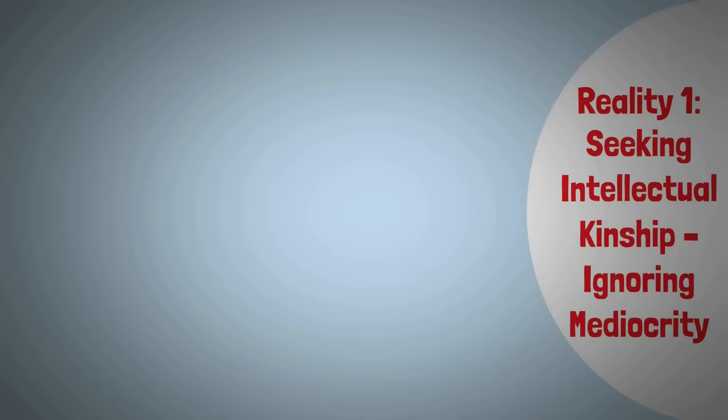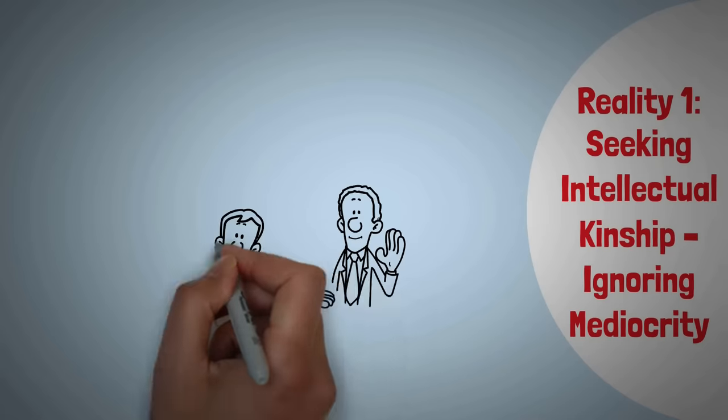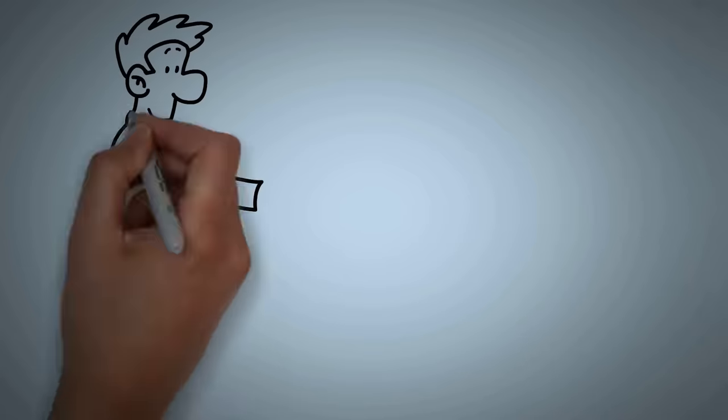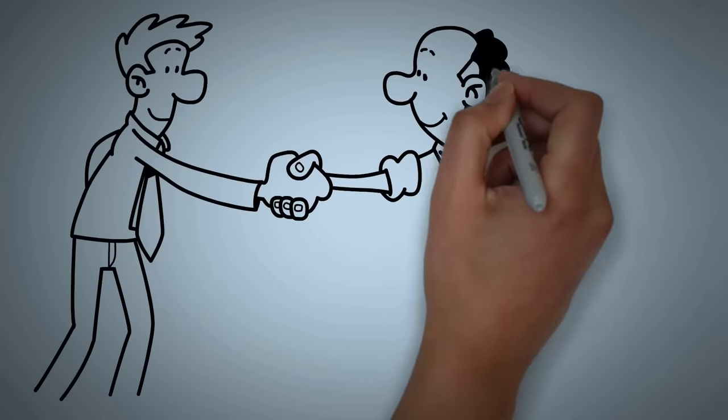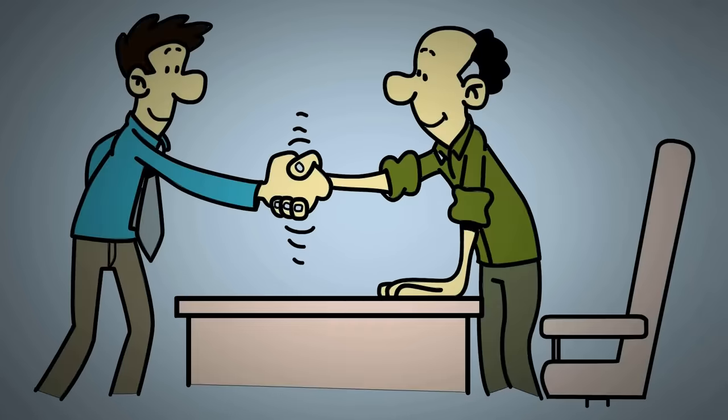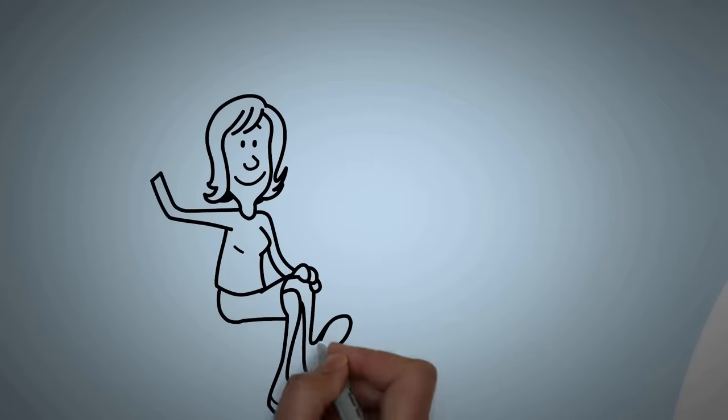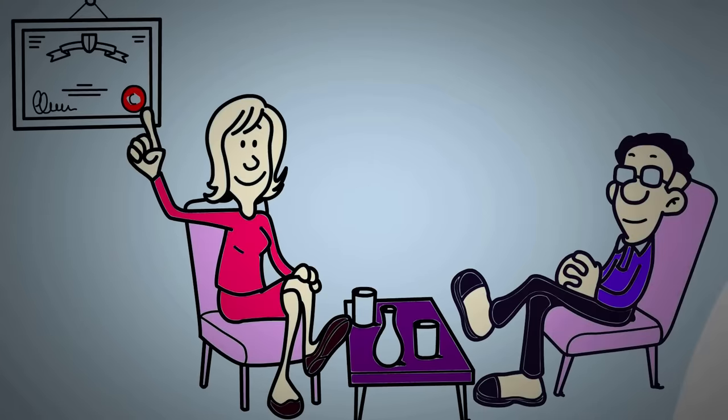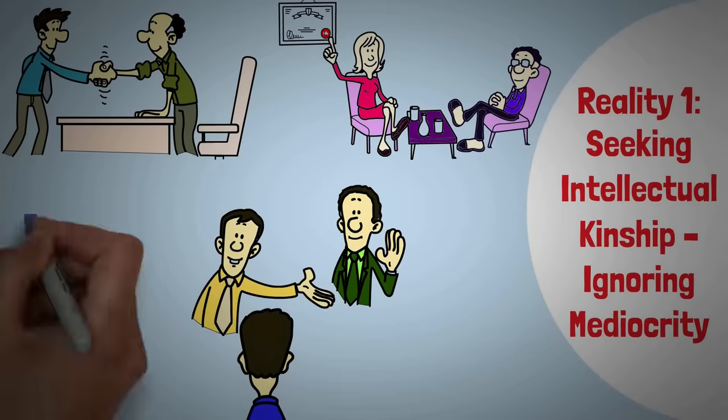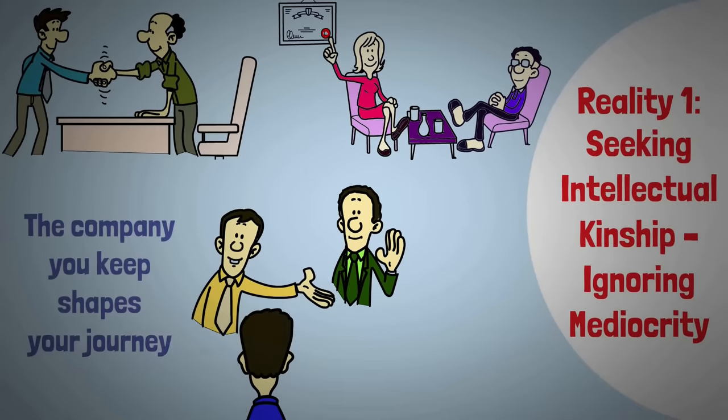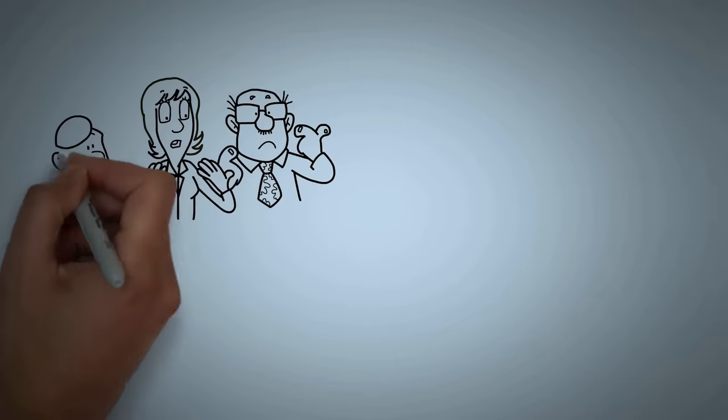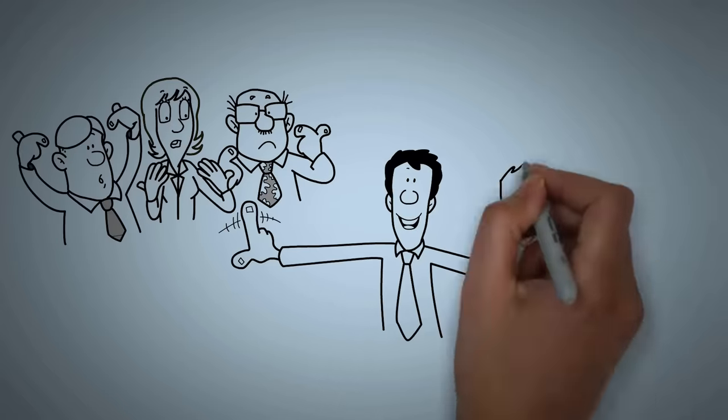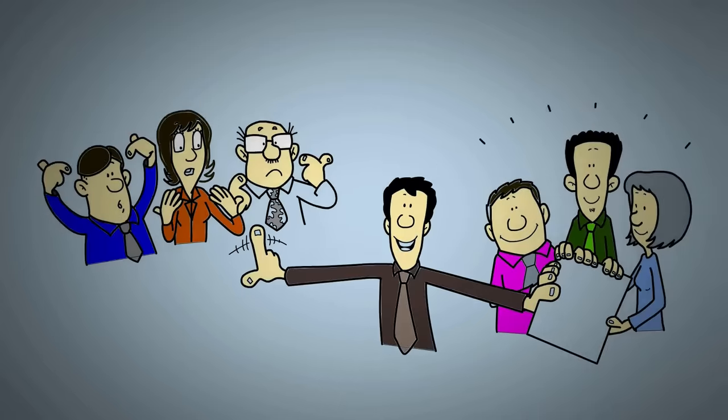Reality 1: Seeking intellectual kinship, ignoring mediocrity. Sigma men, they're like magnets for brilliance. They're drawn to people who match their intellectual wavelength, or even surpass it. It's not just about ego. It's about a deep craving for knowledge and growth. They've got this theory: the company you keep shapes your journey. They know it's no coincidence that successful folks flock together, while negativity gets left behind.